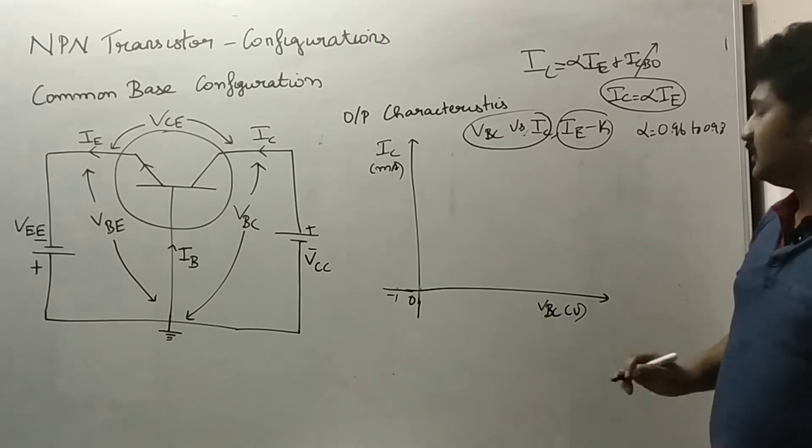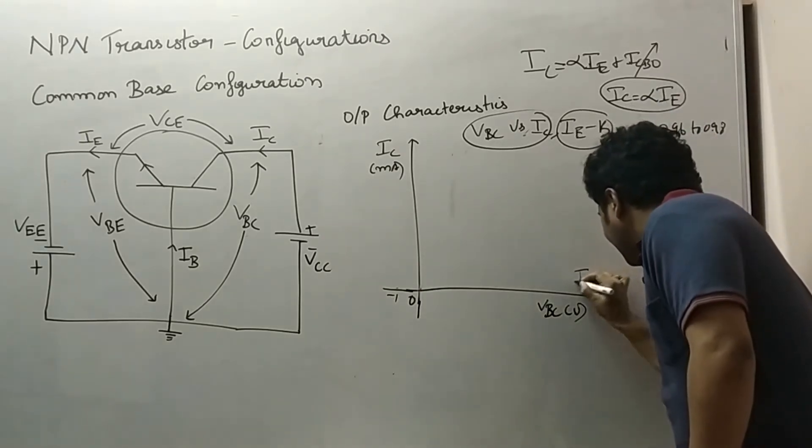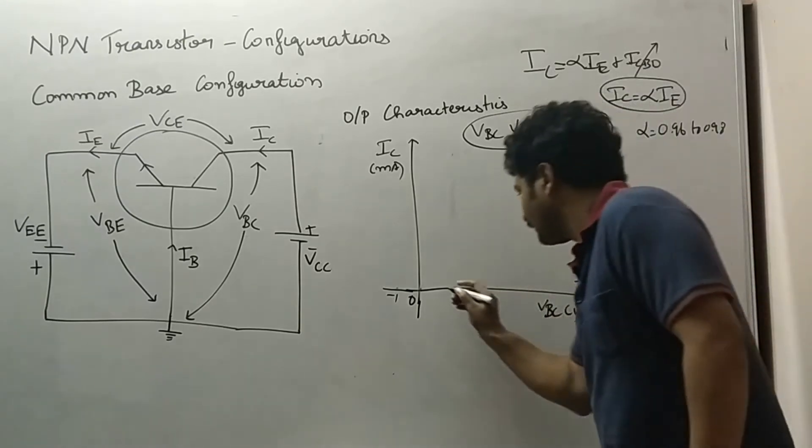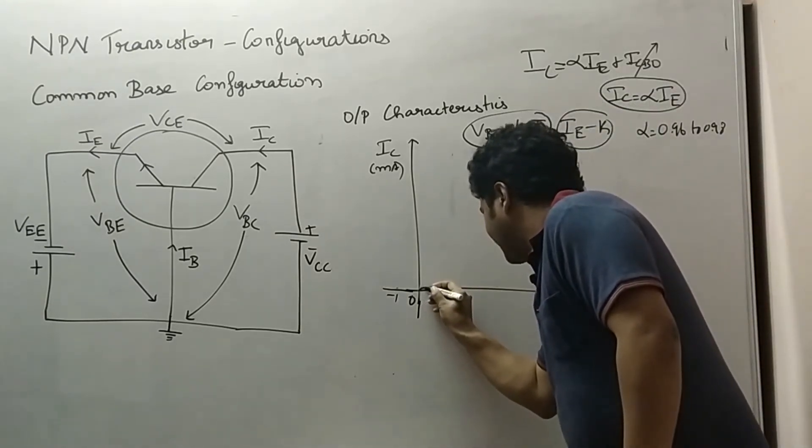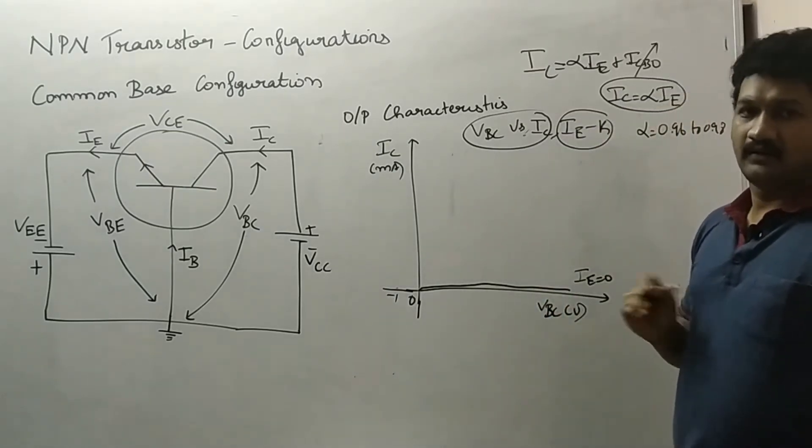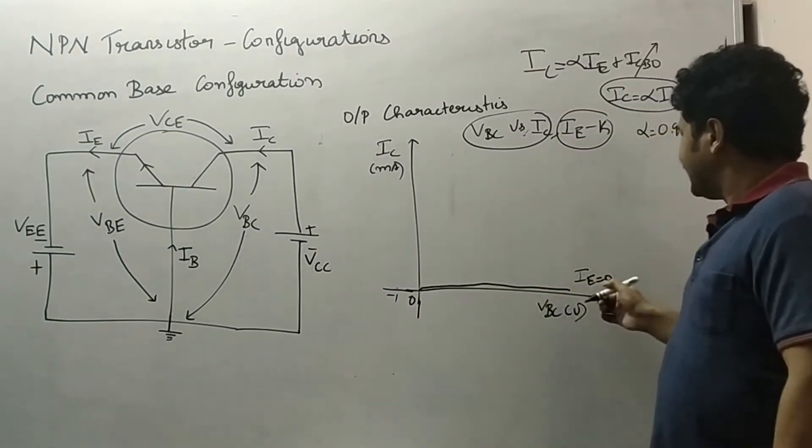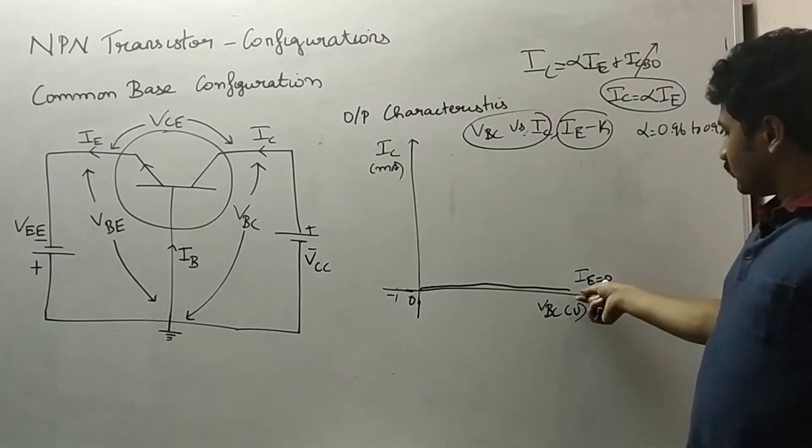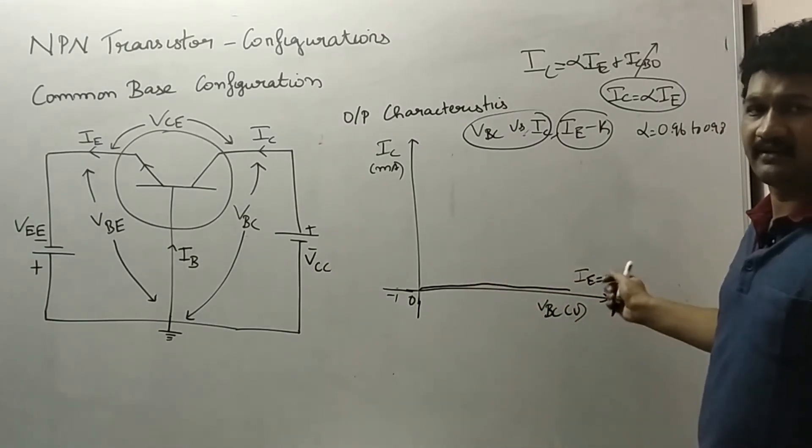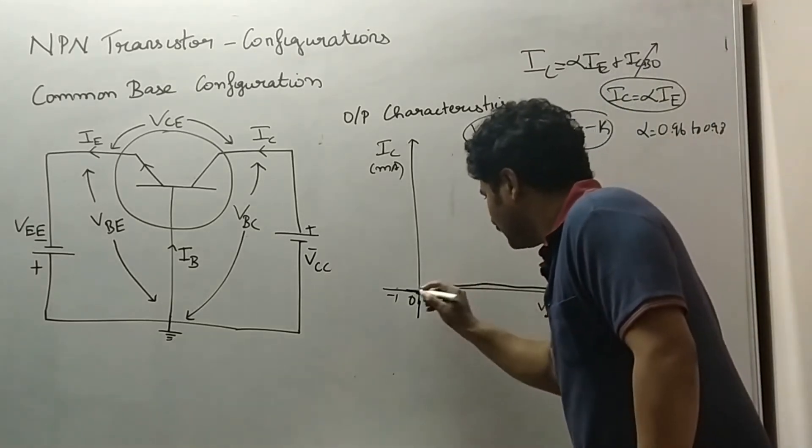Now when I set IE equal to 0, we can expect very minimum amount of collector current, because when IE is 0 or near to 0, we can expect the collector current also in the same manner. Now I am starting from this portion.